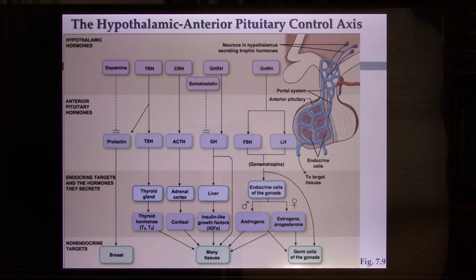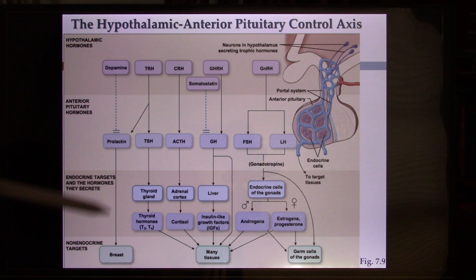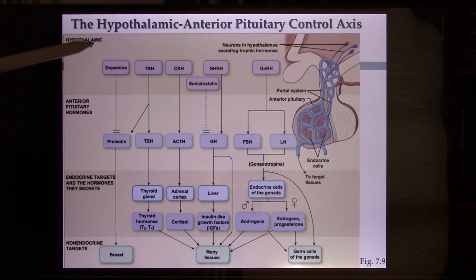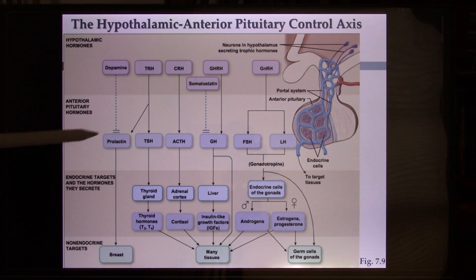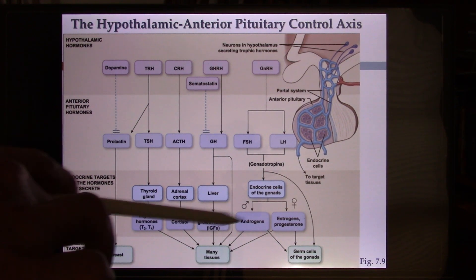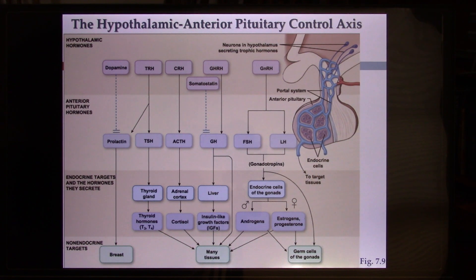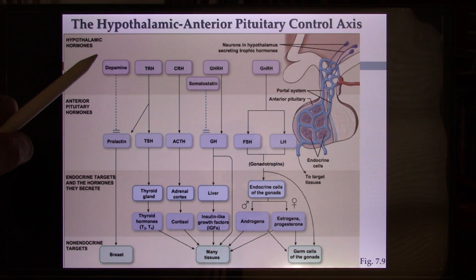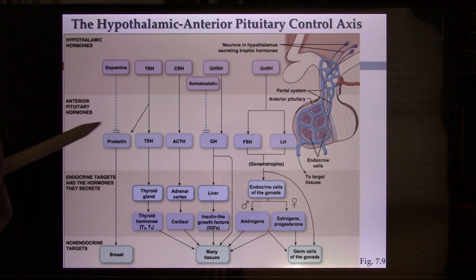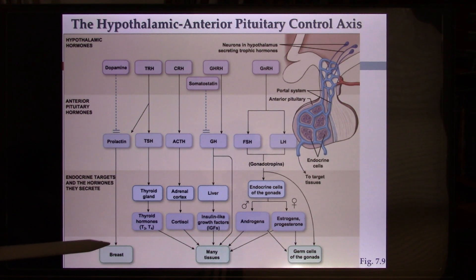Let's look at the hypothalamus-anterior pituitary gland axis. Each traffic hormone from the hypothalamus can regulate another traffic hormone, or the hormones have direct functions in the anterior pituitary gland. Start from dopamine. Dopamine is a very important neurotransmitter, but here we talk about its endocrine function — it's also a traffic hormone. The definition of a traffic hormone is a hormone that has no other function except to trigger another hormone's release.